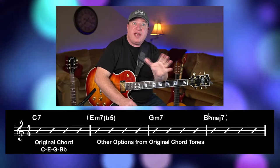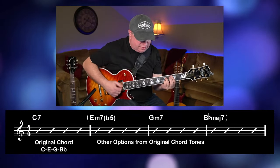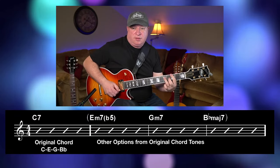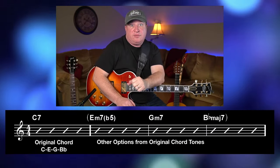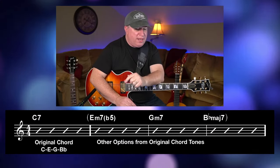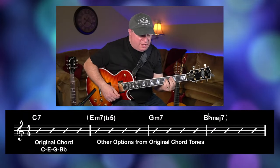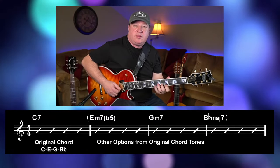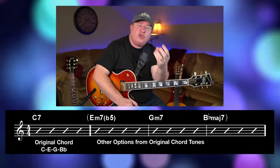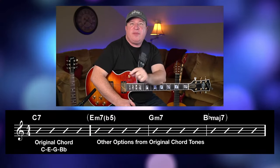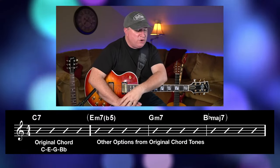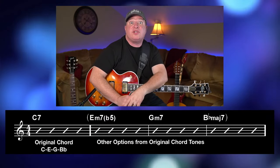Let's look at the last type: dominant seventh chords — C7, A7, things like that. The notes in a C7 are C, E, G, and B-flat. I can build a new chord off each of those tones. Off the third — E — I build an E minor seven flat five. I can play its arpeggio or chord inversions. If I go up to its fifth — G — I can play G minor seventh licks over a C7. And off the B-flat, I could play B-flat major seventh licks over a C7.